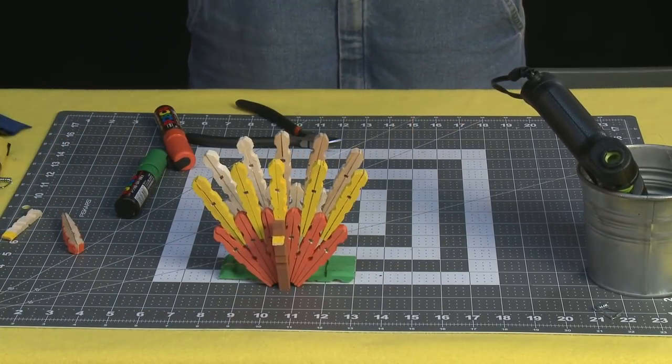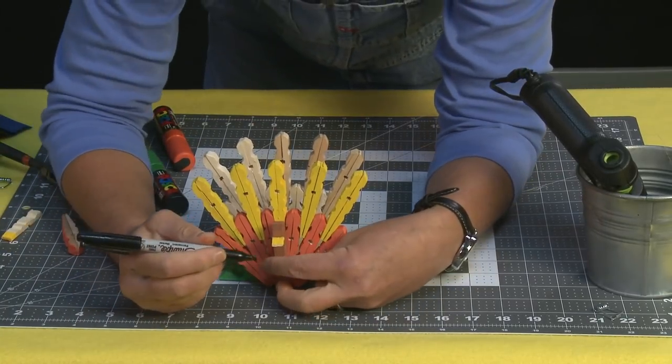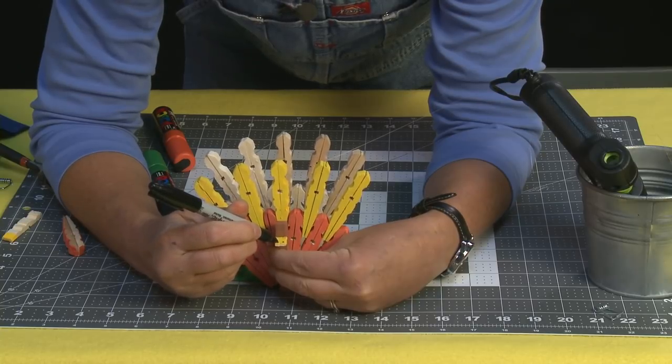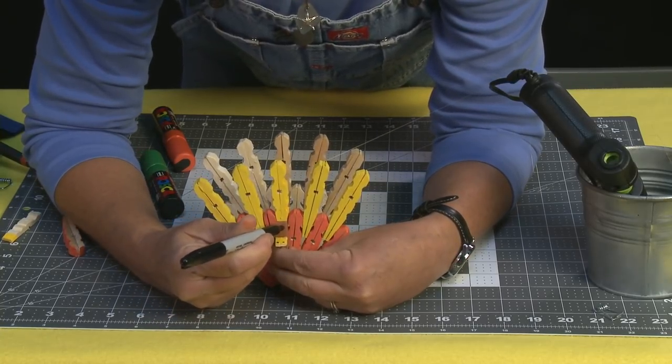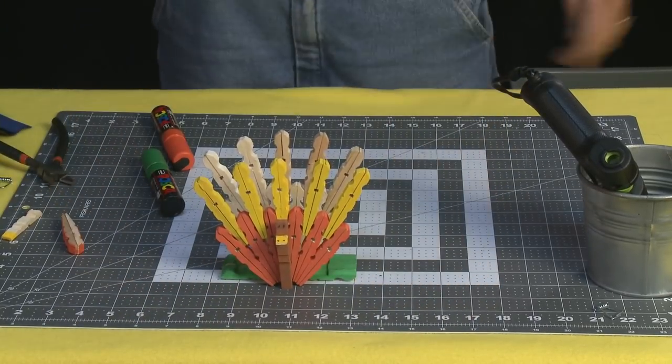And then we're going to take a Sharpie pen here, or Uni Posca if you had a small Uni Posca. And give him a little breathing hole on his nose and two little eyes. There he is.